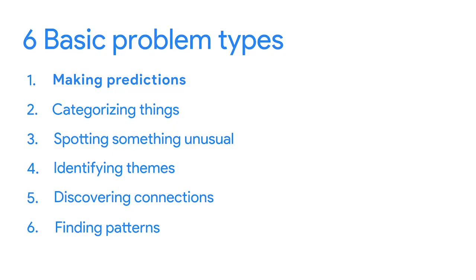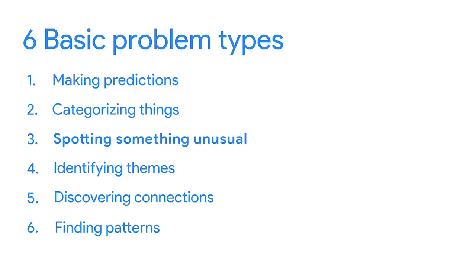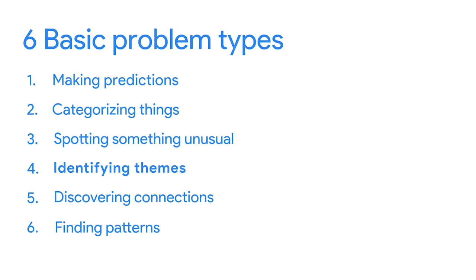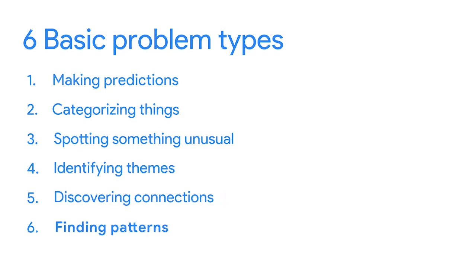Data analysts work with six basic problem types: making predictions, categorizing things, spotting something unusual, identifying themes, discovering connections, and finding patterns.